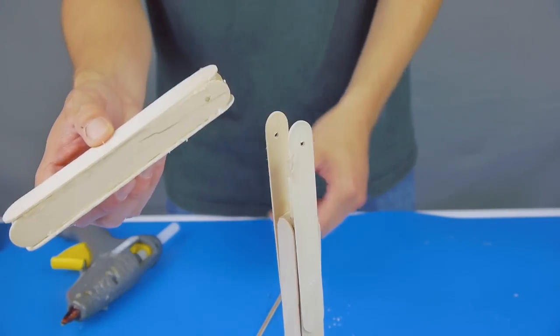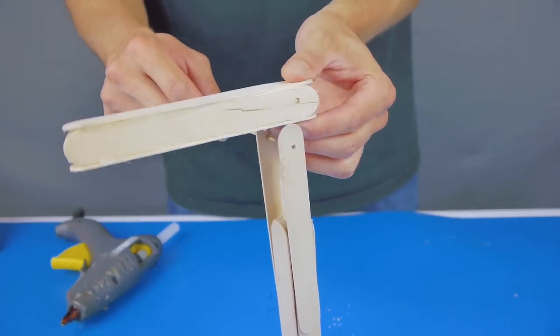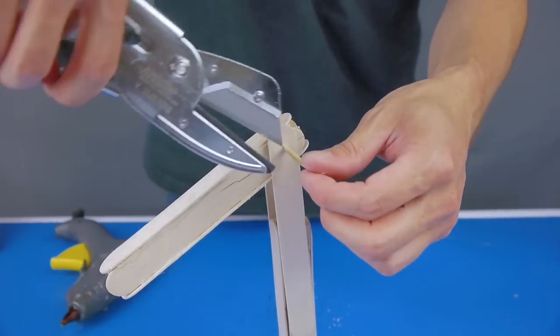The fighting arm stem is created by gluing four sticks together into a box shape, using the two other sticks with holes. Insert a skewer through all four craft sticks to create a hinge for the fighting arm stem.